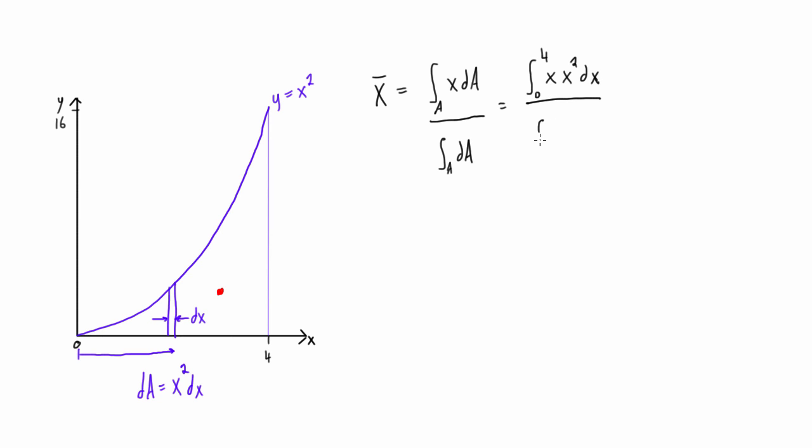And then down here on the bottom, we also have the same thing, same interval, and we don't have that first x, we just have dA, which is x squared dx.